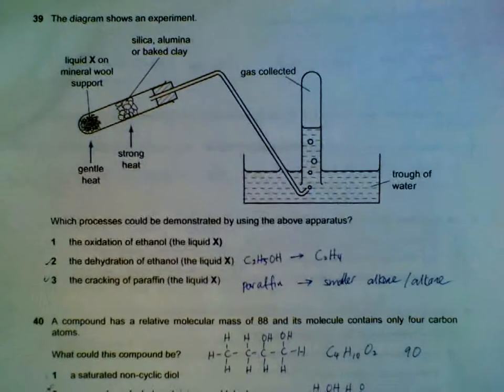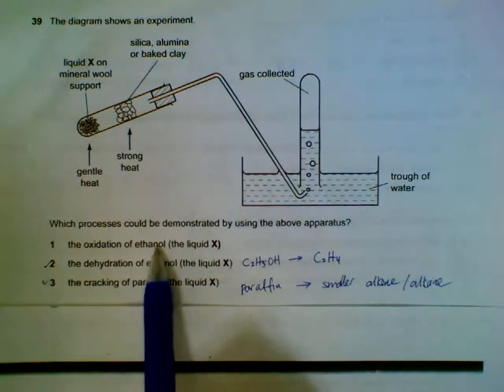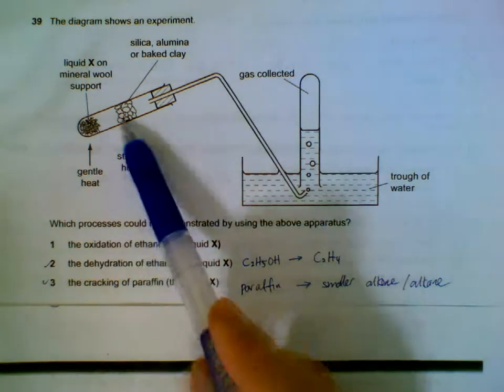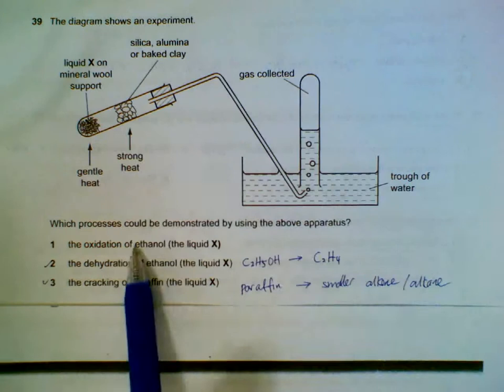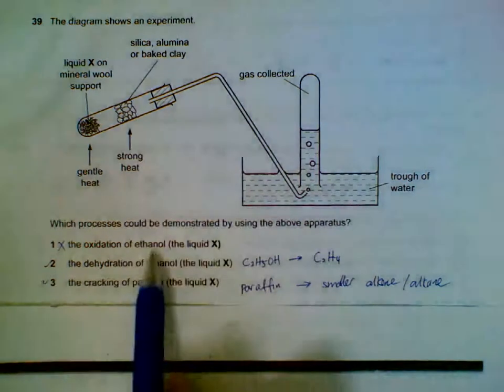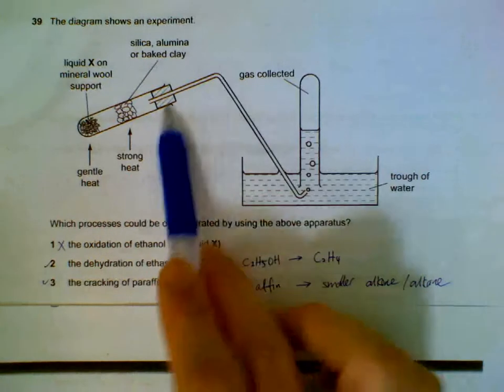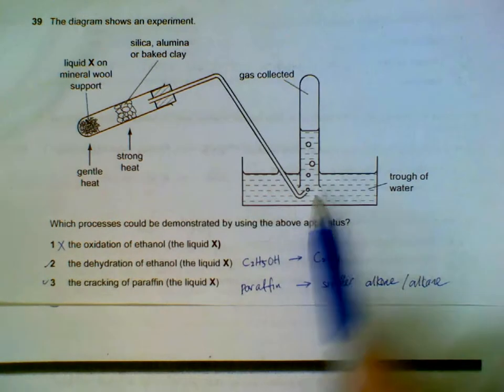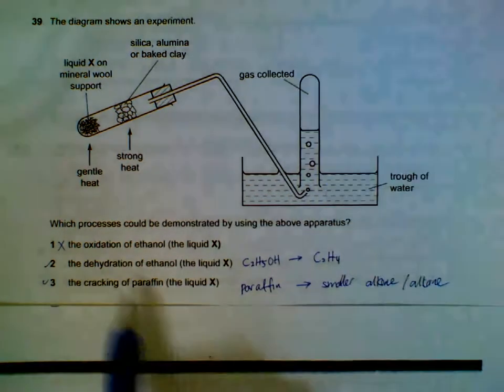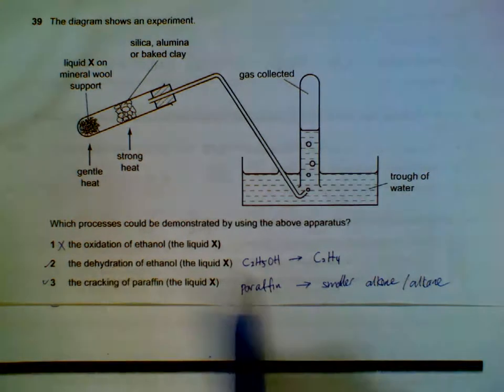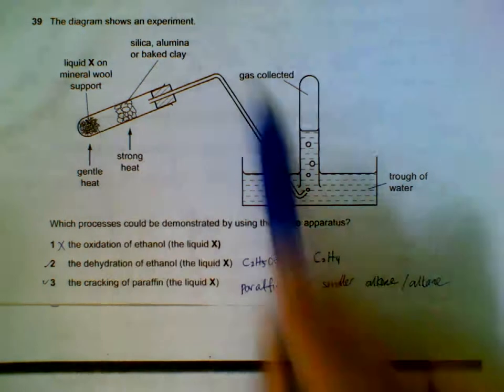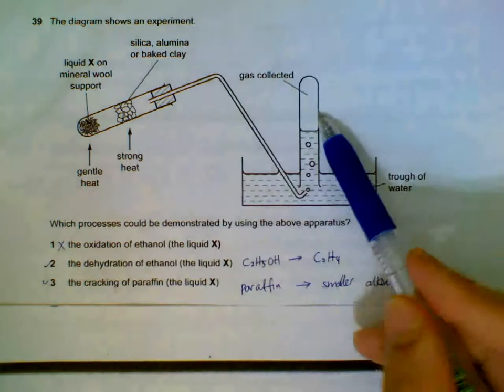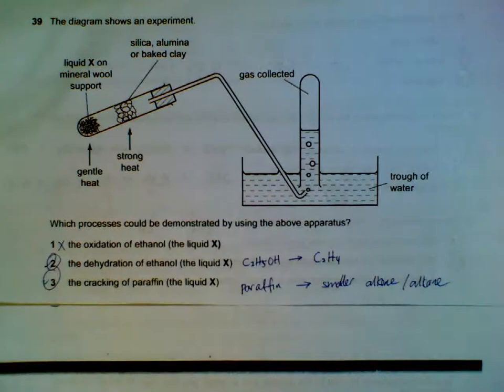Number 39: what can be demonstrated by the above apparatus? Oxidation of ethanol will require an oxidizing agent, which is not reflected here, so one will be wrong. Anyway, even if there is an oxidizing agent, your ethanol which forms ethanoic acid - both of them will dissolve in the water, you will not collect any gas. Two: dehydration, you get your ethene, which should be collected here. Cracking: you get your smaller alkanes and alkenes which will be collected here also. So two and three are correct.